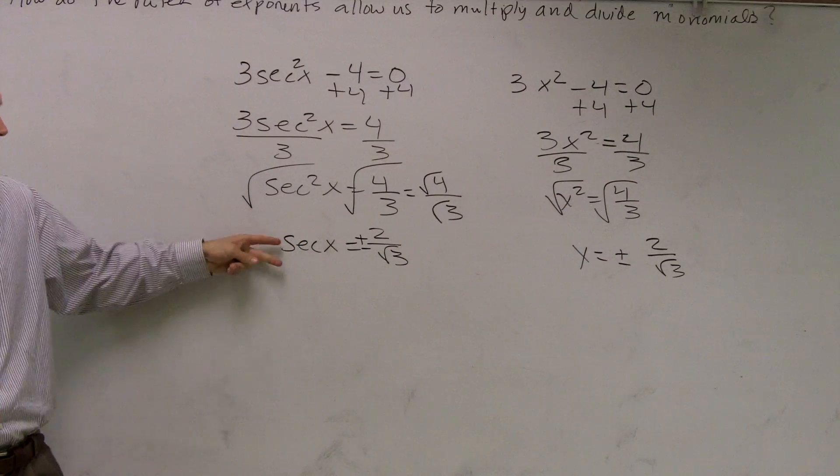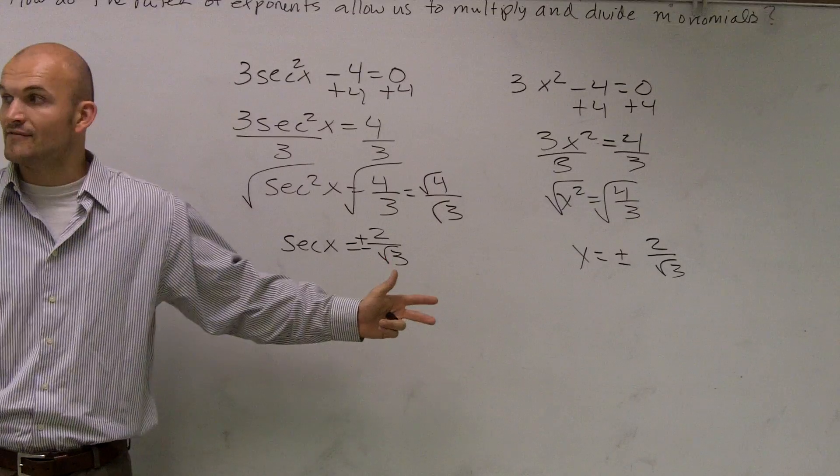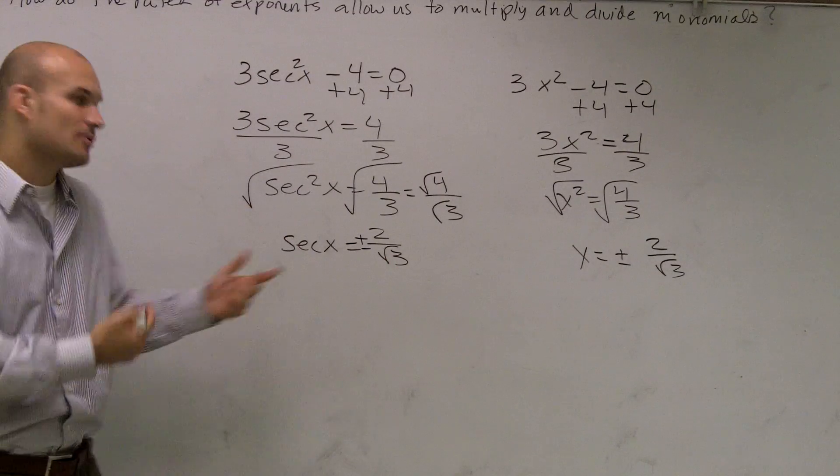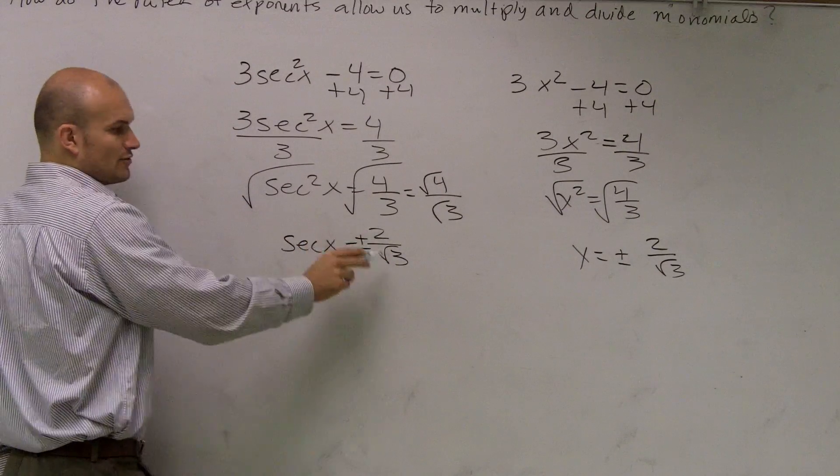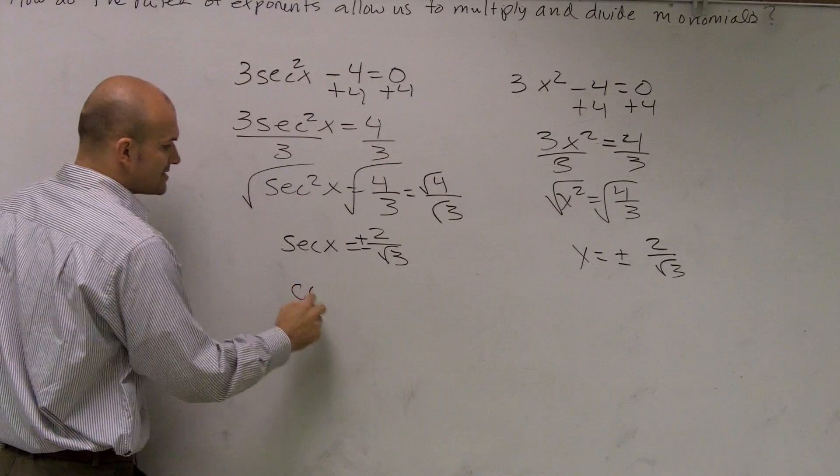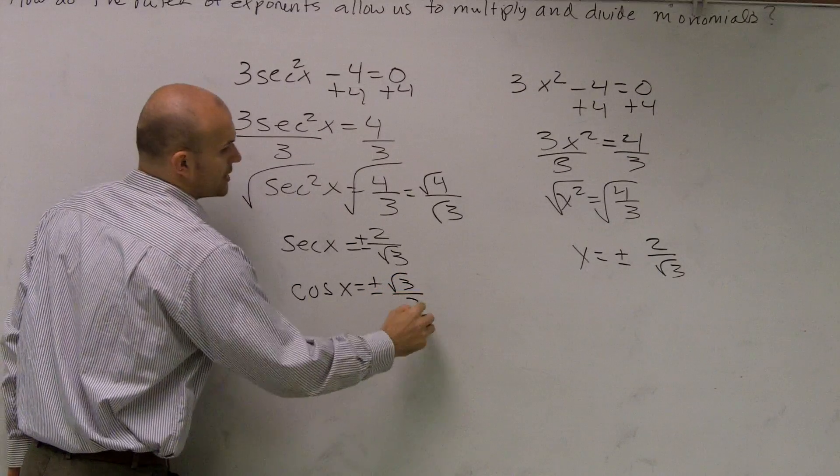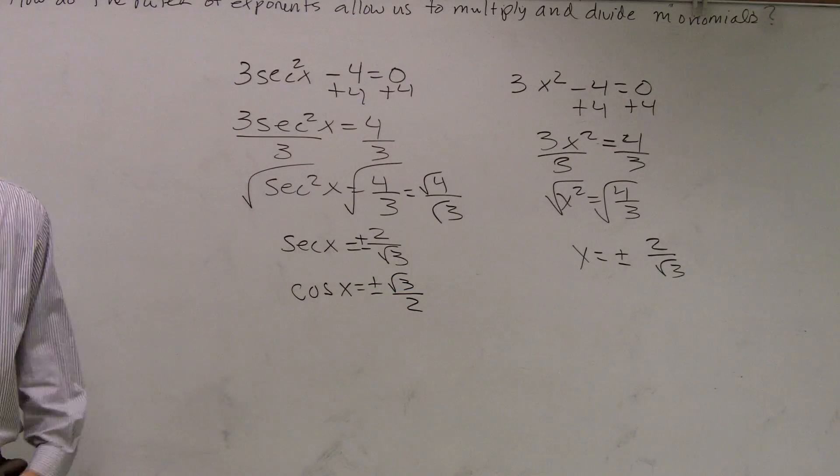...we're solving for our secant. We still need to find what this value is. It's very difficult for me to be able to look at what the secant value is. It's much easier for me to find the cosine value, which is the reciprocal of secant. So rather than writing 2 over radical 3 and rationalizing it, what I would do is just write it as cosine of x equals plus or minus radical 3 over 2.